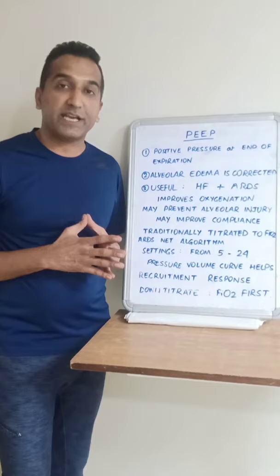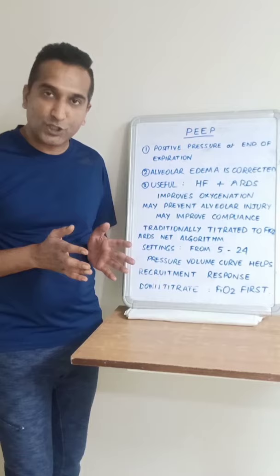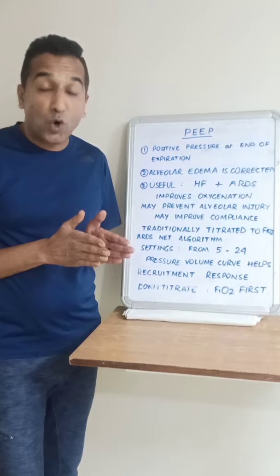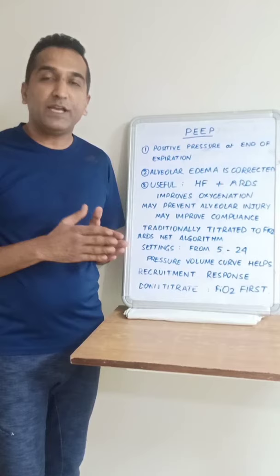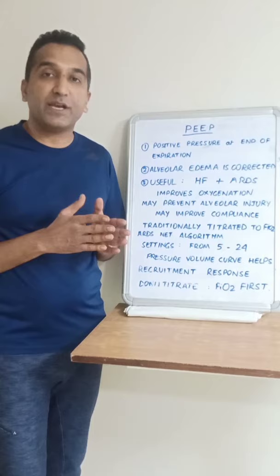In ARDS, PEEP improves oxygenation by involving more alveoli in the gas exchange process. It may also prevent alveolar damage. If the alveoli are collapsed, a lot of pressure will be required only to open them, and further pressure will be required to fill them with air for gas exchange. This causes a huge excursion of pressure with each breath, and larger excursions of alveolar pressure cause more injury to the alveolar walls — we call it shear injury. This can be reduced by the application of PEEP.